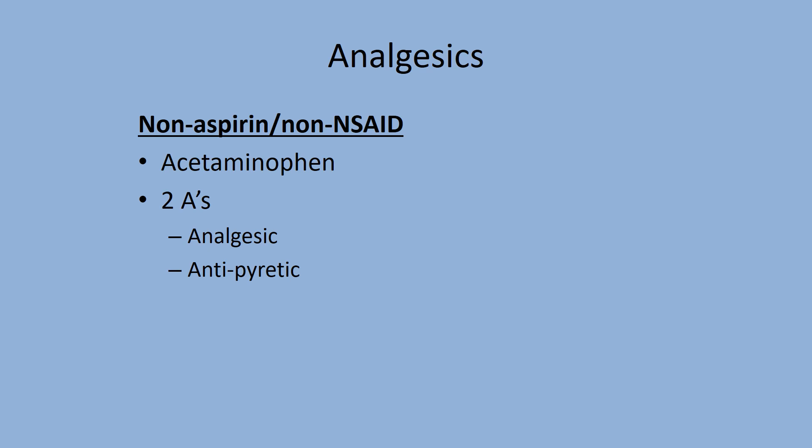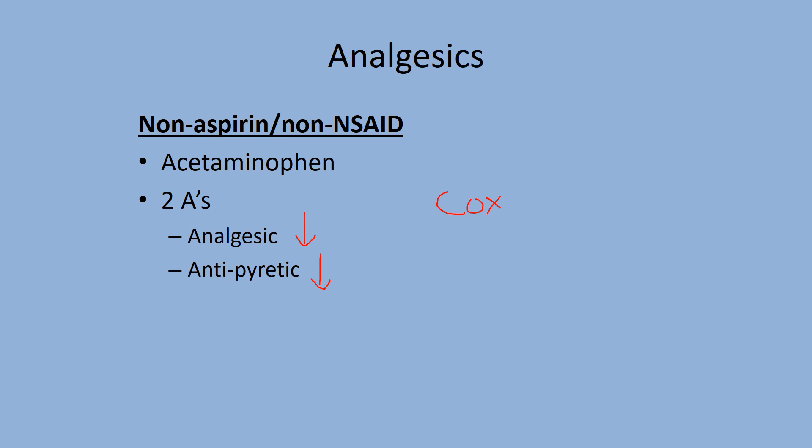Unlike aspirin or NSAIDs, Tylenol is kind of in its own class — it only has two of the three A's. It does reduce pain and reduce fever, but Tylenol does not work at the site of pain to prevent the COX enzyme from making prostaglandins. Instead, Tylenol works by changing your perception of pain — it works in your head rather than at the injury site. The maximum daily dose of Tylenol for healthy adults is 3,000 milligrams. If you're elderly or have liver problems, you may want to avoid Tylenol altogether or reduce your intake.